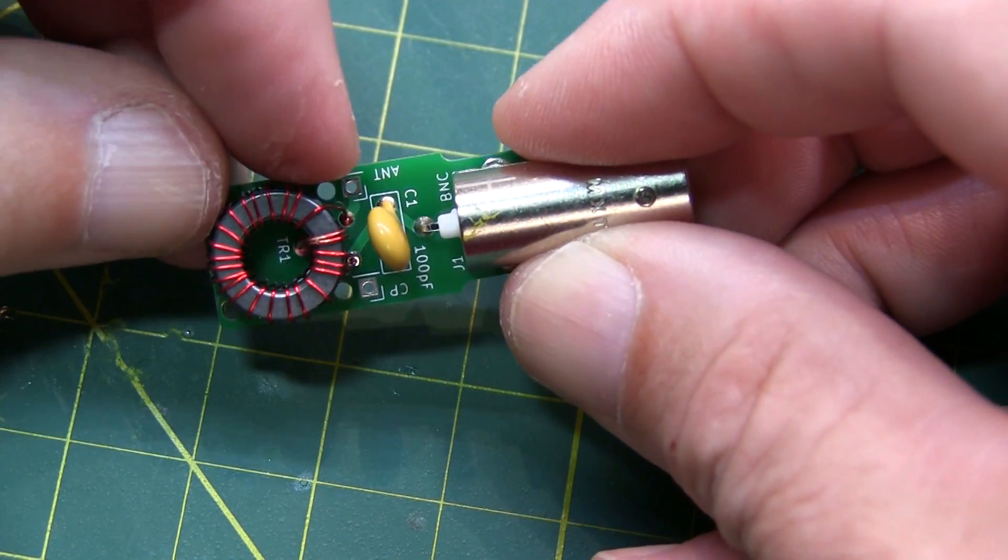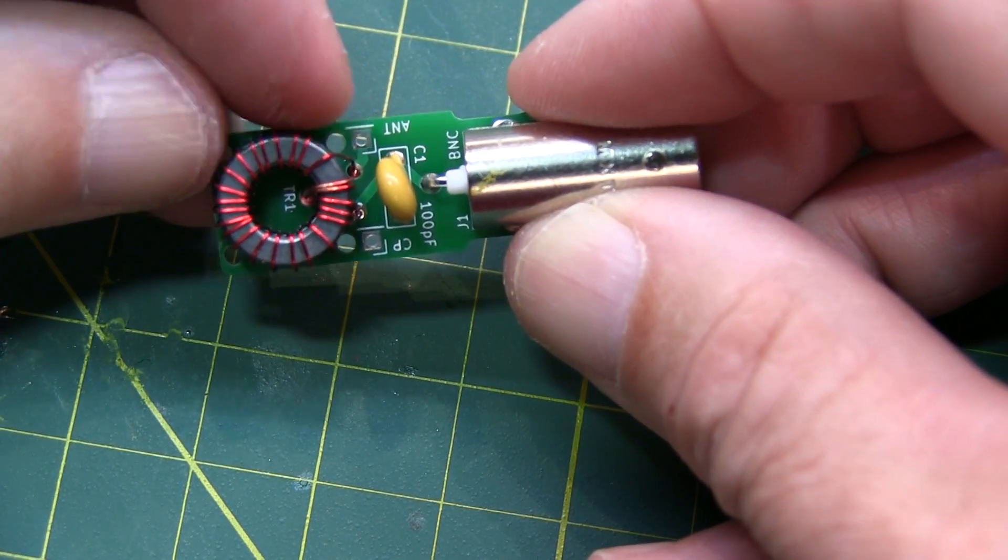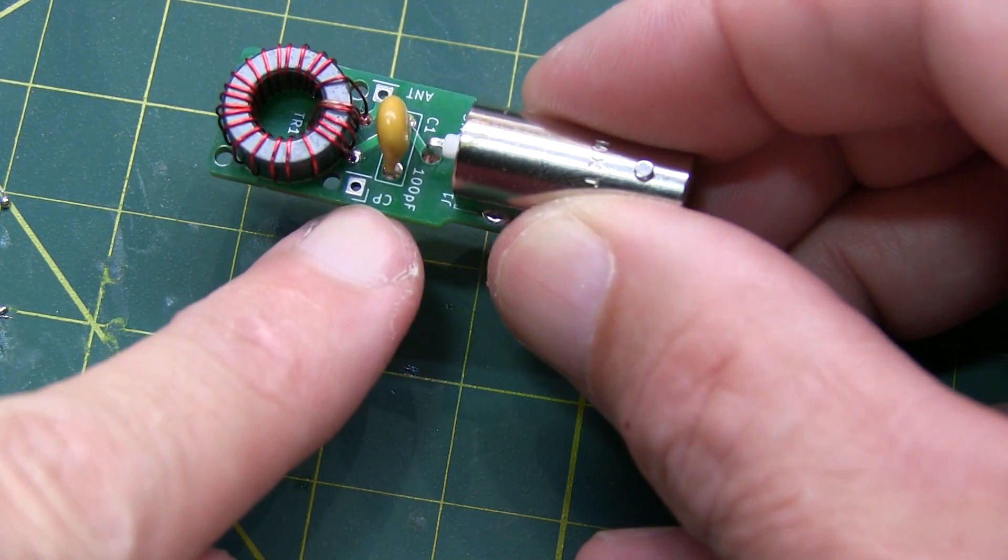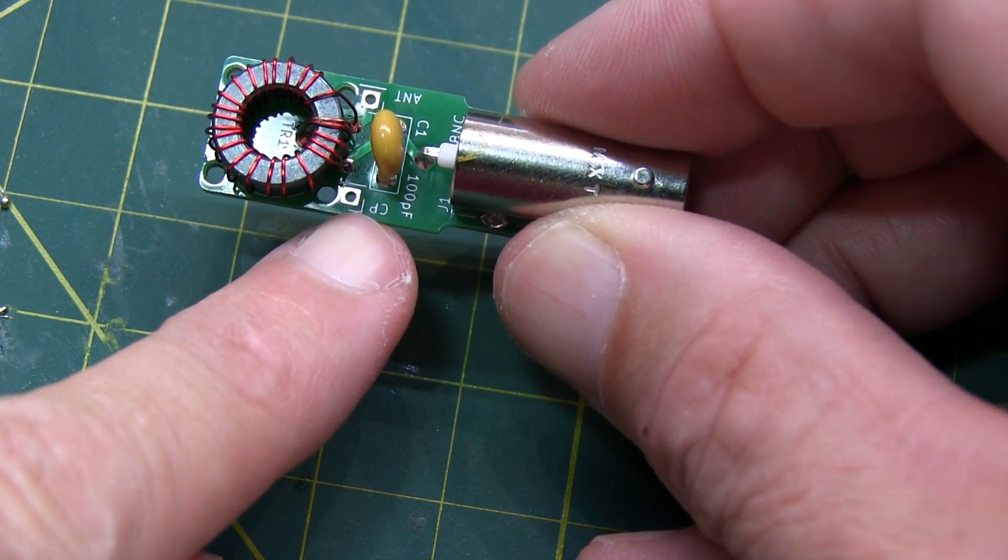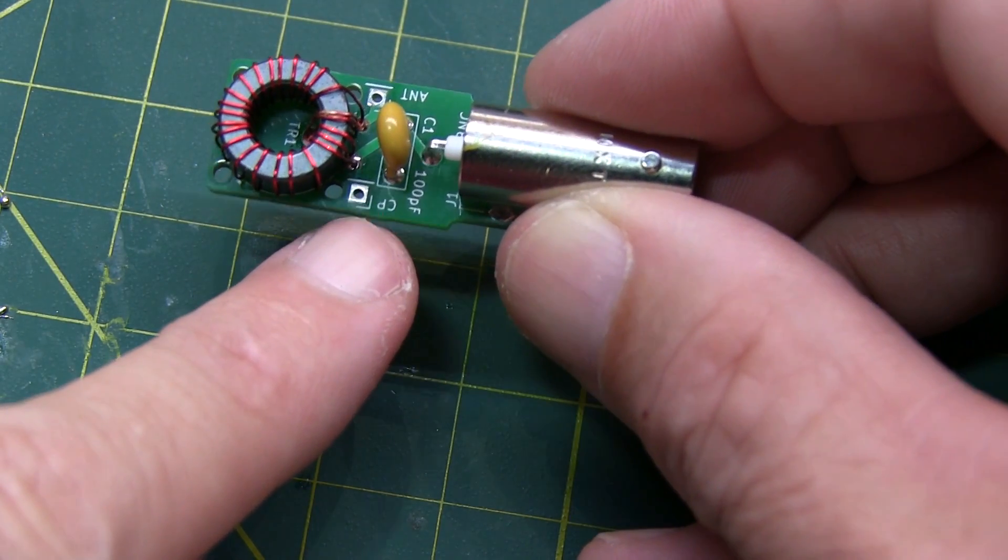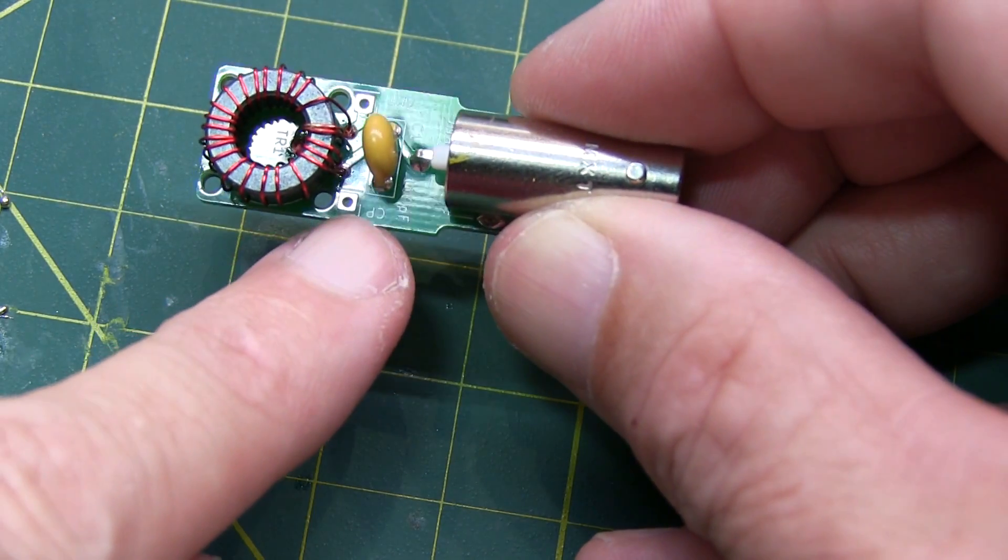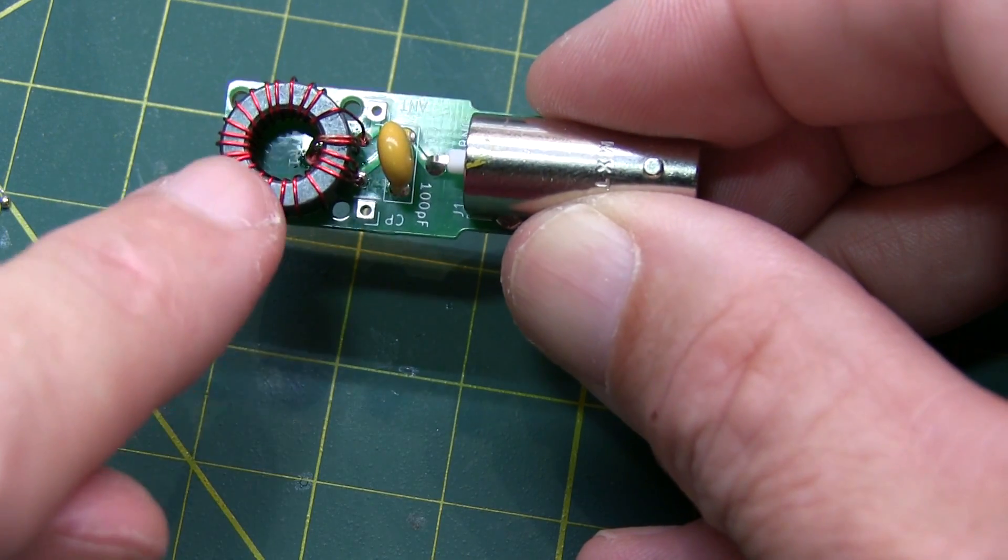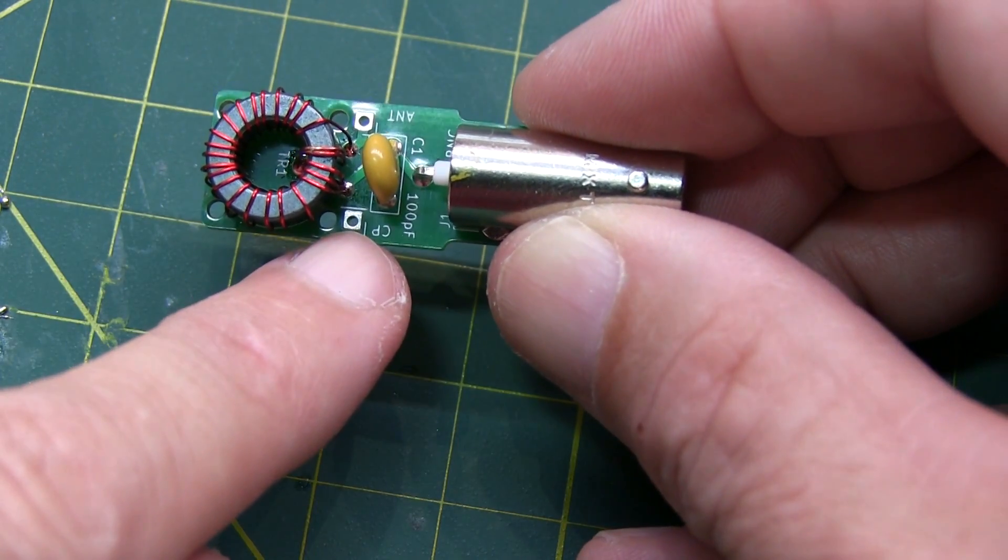The antenna wire connects to this terminal here, and the counterpoise would connect to this terminal, which is connected to ground. If you're doing an NFED half wave, you really don't need a counterpoise. If you're building this as the NFED random wire with a 9 to 1 transformer, then you would use the counterpoise.